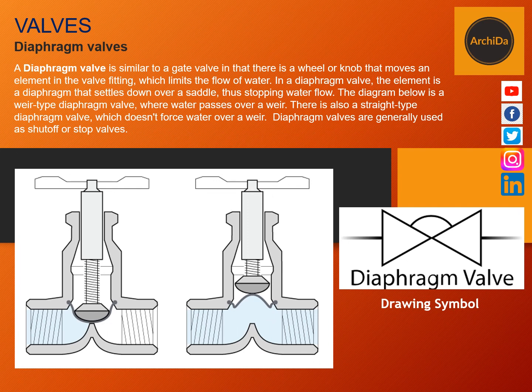A diaphragm valve is similar to a gate valve in that there is a wheel or knob that moves an element in the valve fitting, which limits the flow of water. In a diaphragm valve, the element is a diaphragm that settles down over a saddle, thus stopping water flow. The diagram shown is a weir-type diaphragm valve where water pressure passes over a weir. There is also a straight-type diaphragm valve which doesn't force water over a weir.